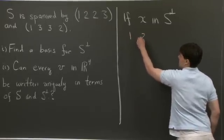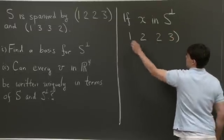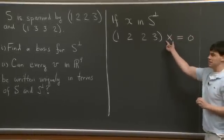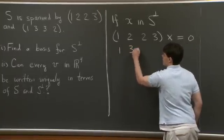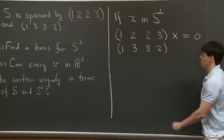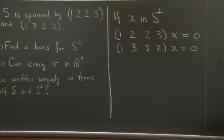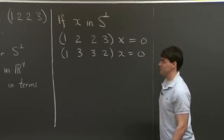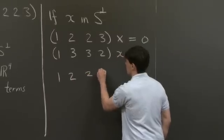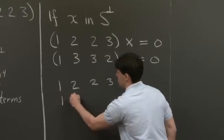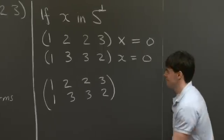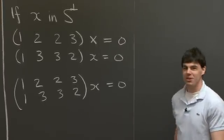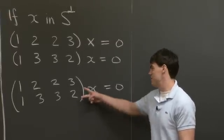So it's sufficient that x be perpendicular to the two basis vectors in S. So specifically, I can take (1, 2, 2, 3) and dot it with x, and it's going to be 0, so I'm treating x as a column vector here. In addition, x must also be orthogonal to (1, 3, 3, 2). So any vector x that's in S perp must be orthogonal to both of these vectors. So what we can do is we can write this as a matrix equation. And we do this by combining these two vectors as rows of the matrix.